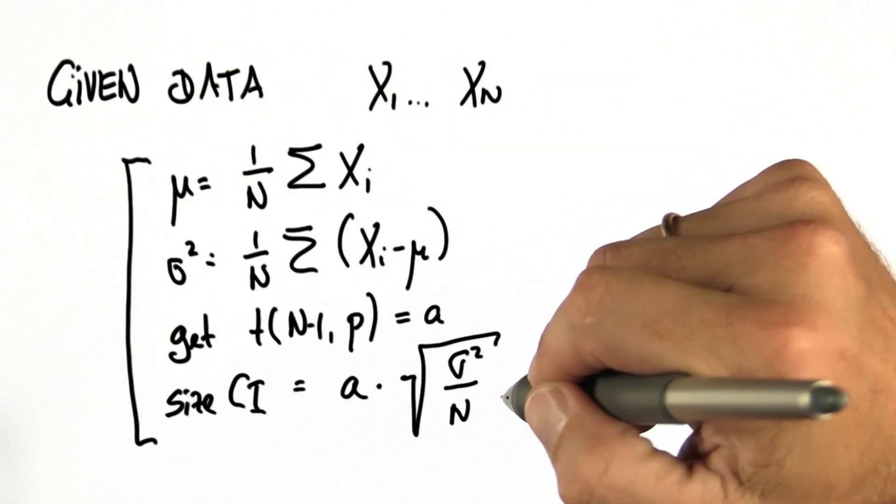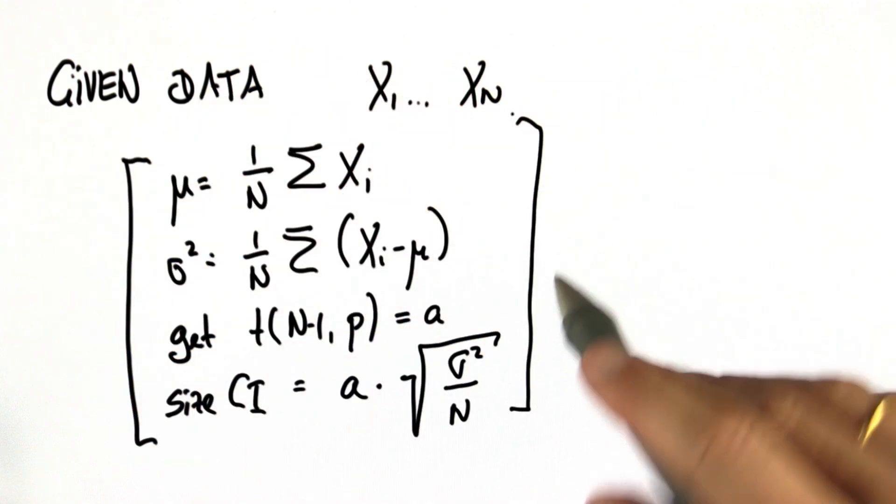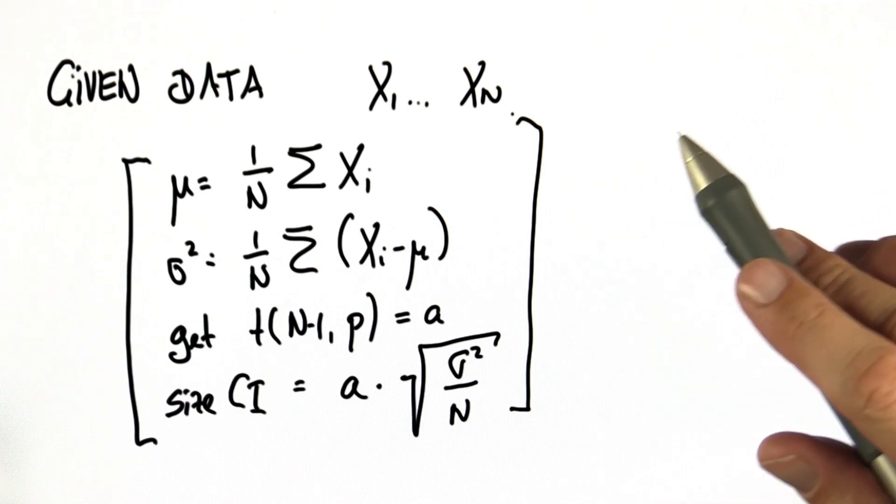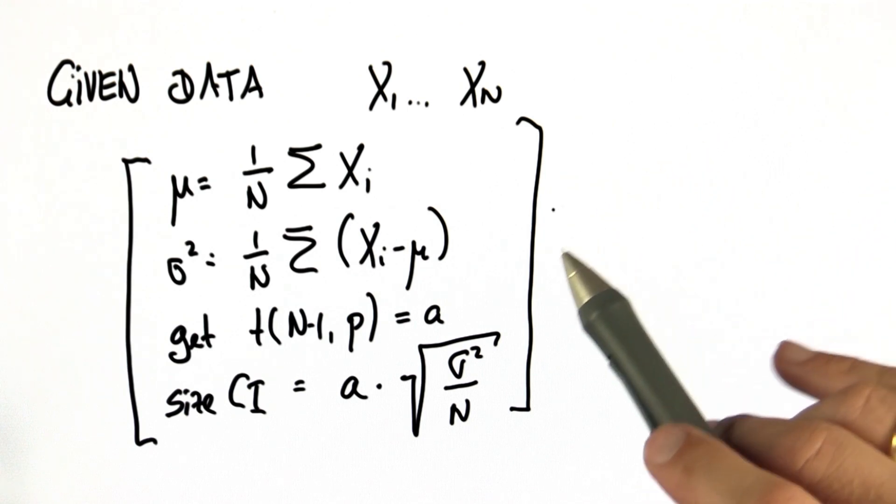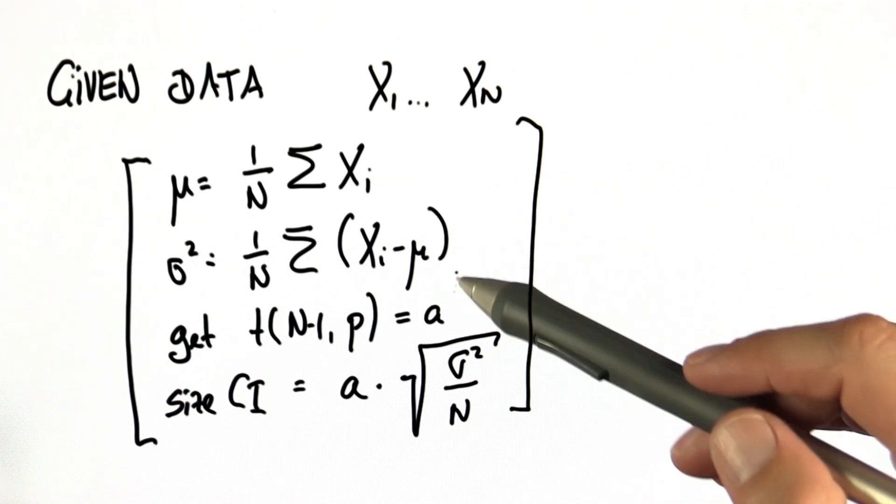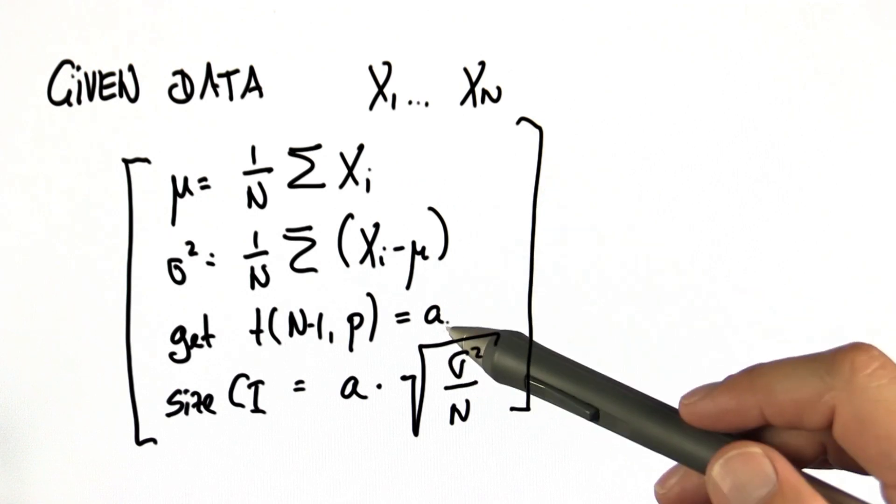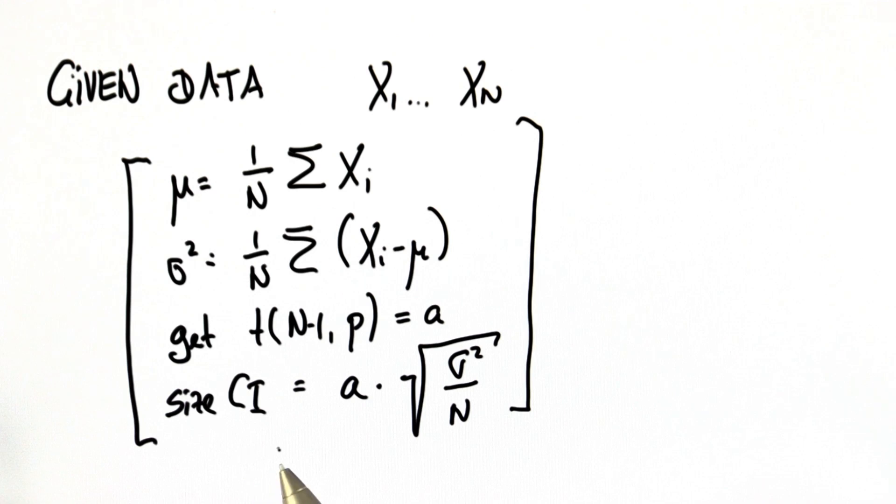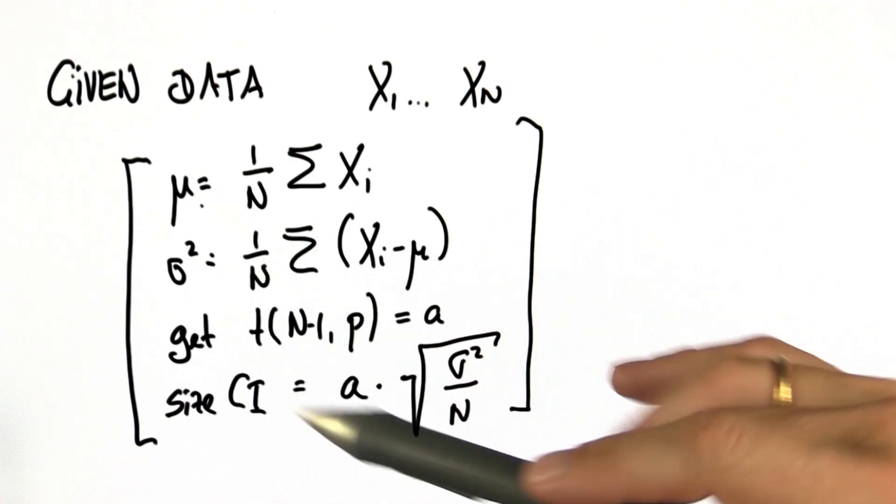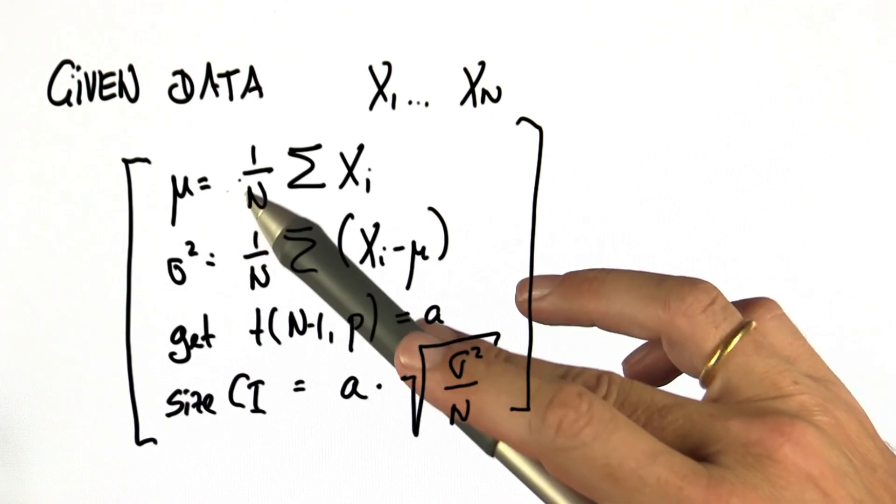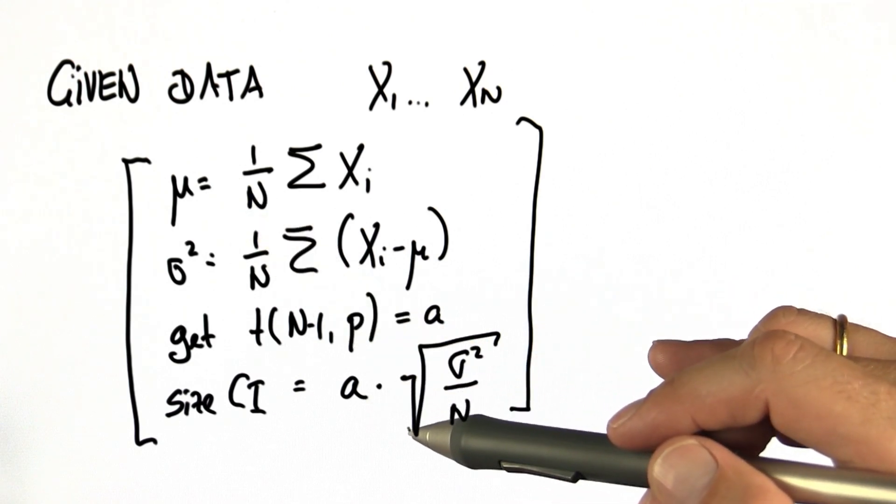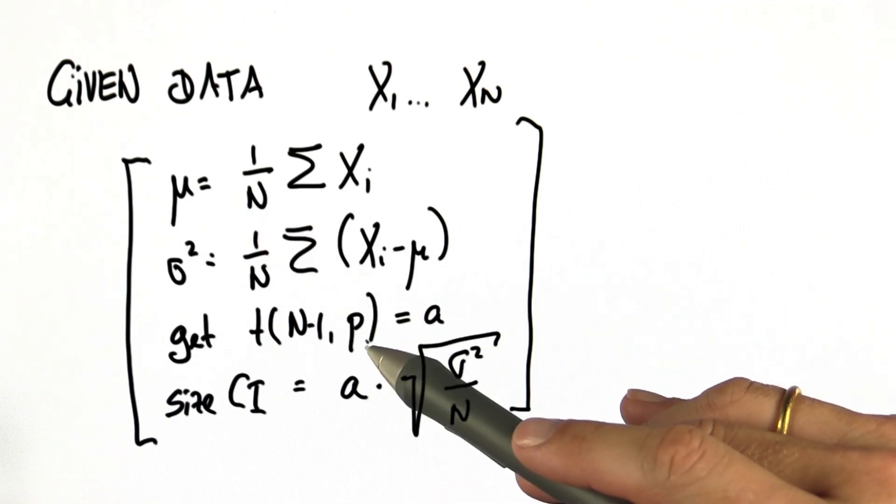That algorithm would have looked really cryptic if I had just given it to you, but by now it should make a lot of sense because you've practiced every element of it. The mean, the empirical variance, getting a number from a table, and then compute the size of the confidence interval, which you then put into the plus-minus term. So mu minus this is the lower bound, mu plus this is the upper bound of the confidence interval according to the confidence level specified by the error probability p.